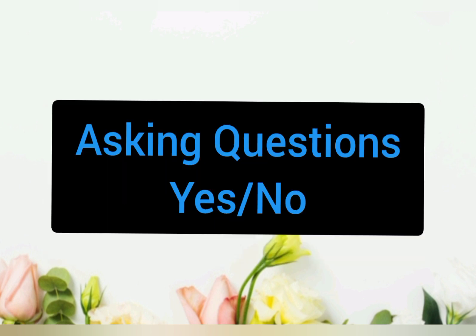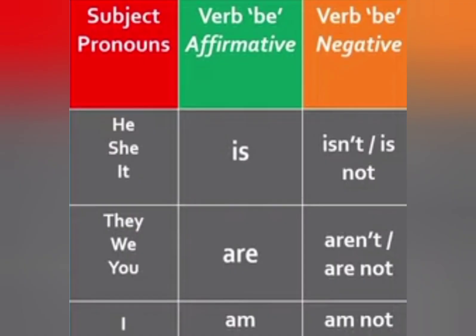Alright, let's proceed to asking questions — yes and no. Before that, I would like to revise this table. Please repeat after me: He is, he isn't, is not. She is, she isn't, she is not. It is, it isn't, it is not. They are, they aren't, they are not. We are, we aren't, we are not. You are, you aren't, you are not. And the last one, I am and I am not.